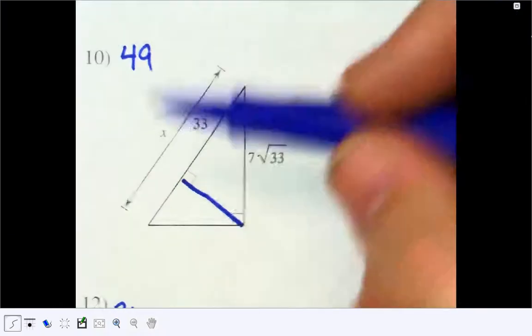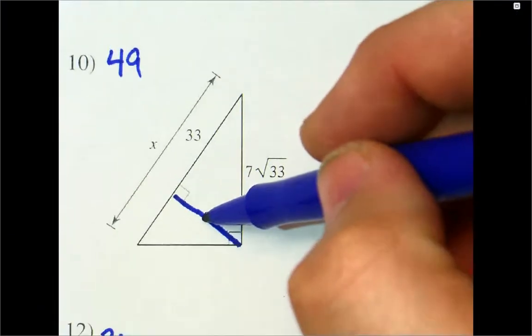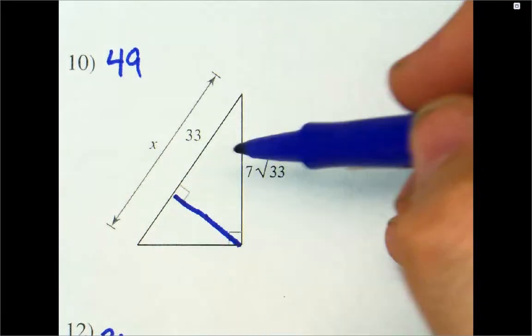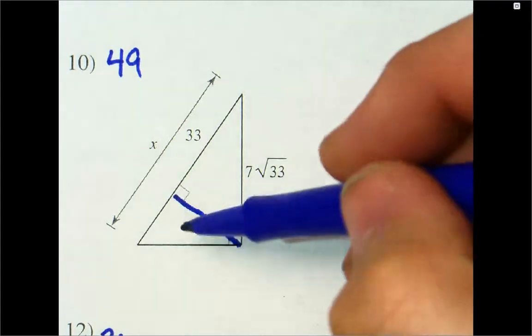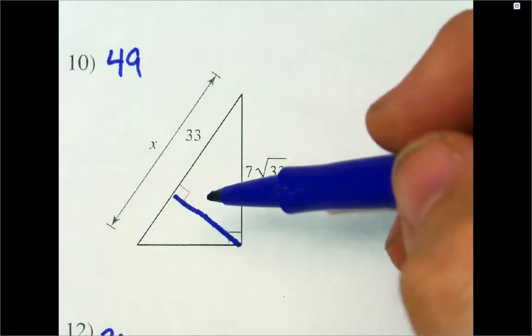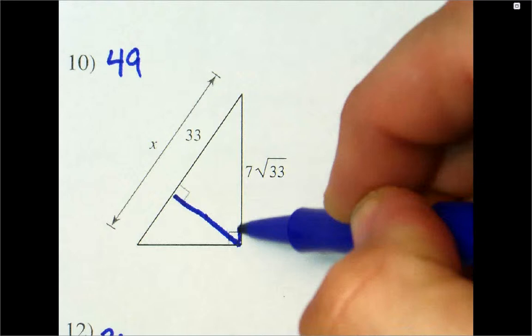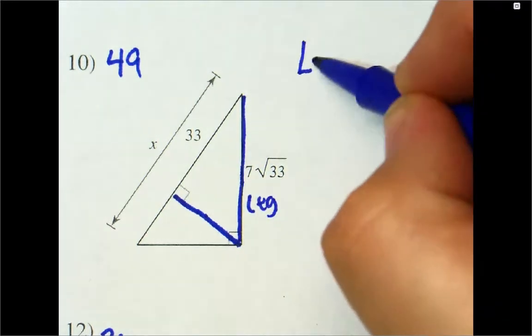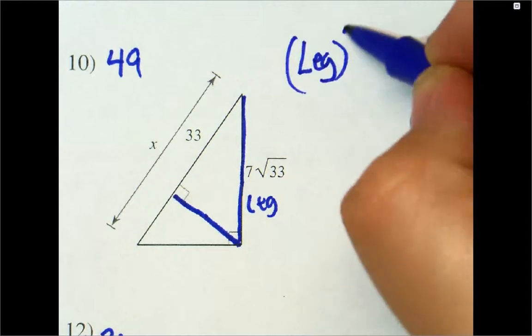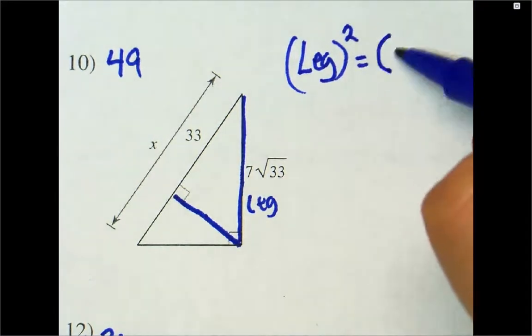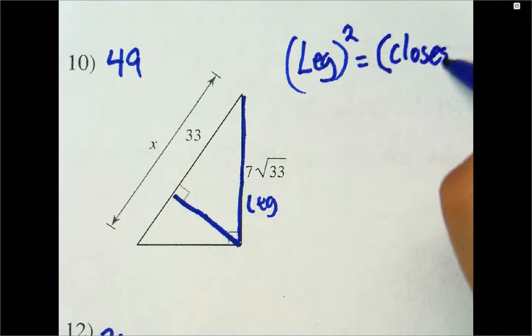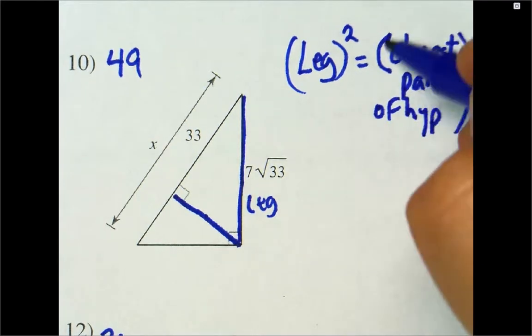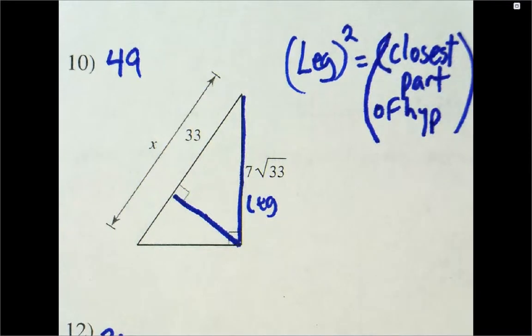But if we don't know it, if we know this altitude, it's this squared equals that, this part times that part. But if we don't have that and we only have the leg, and this is missing, then we have to go into the part where it says that this leg right here is going to be the leg squared is equal to the closest part of the hypotenuse, times the hypotenuse.